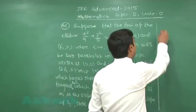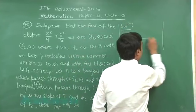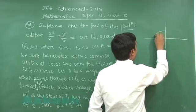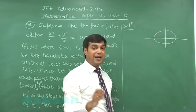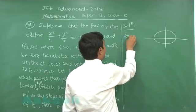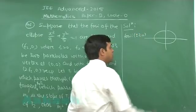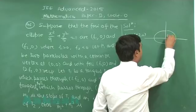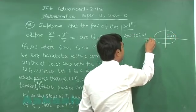For the given ellipse x²/9 + y²/5 = 1, the foci can be obtained as (±2,0). So F₁(2,0) and F₂(-2,0).